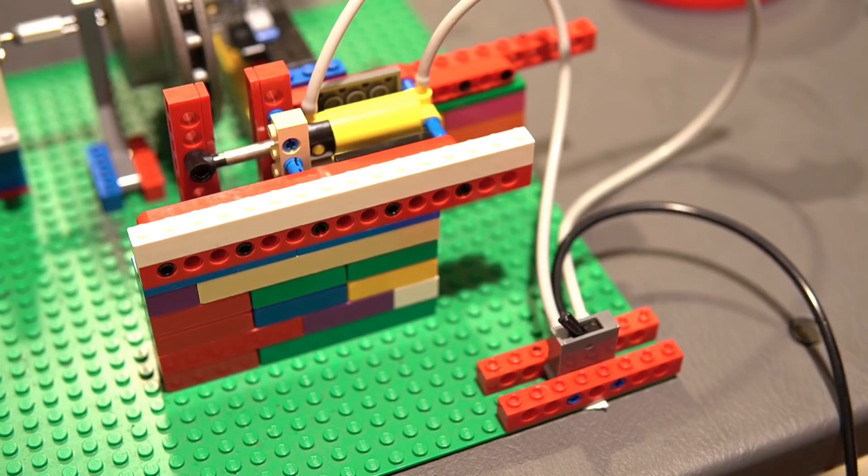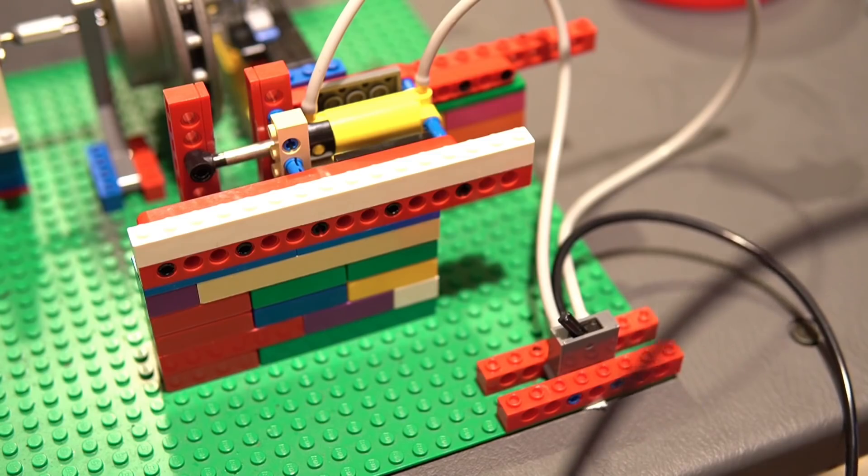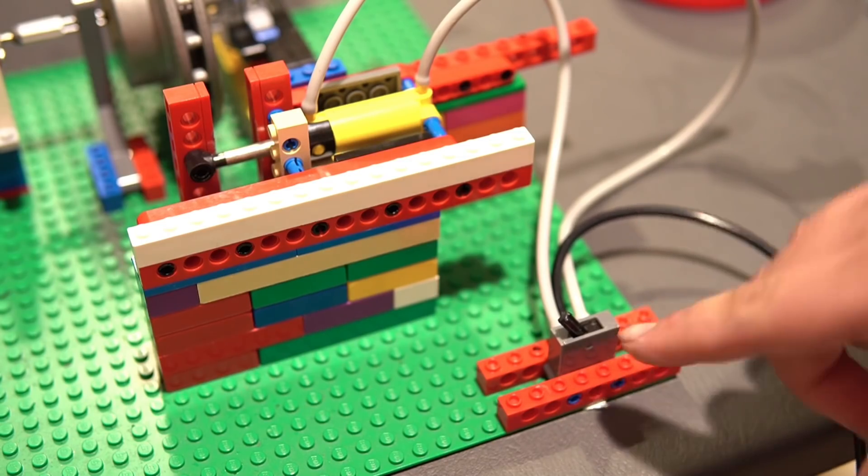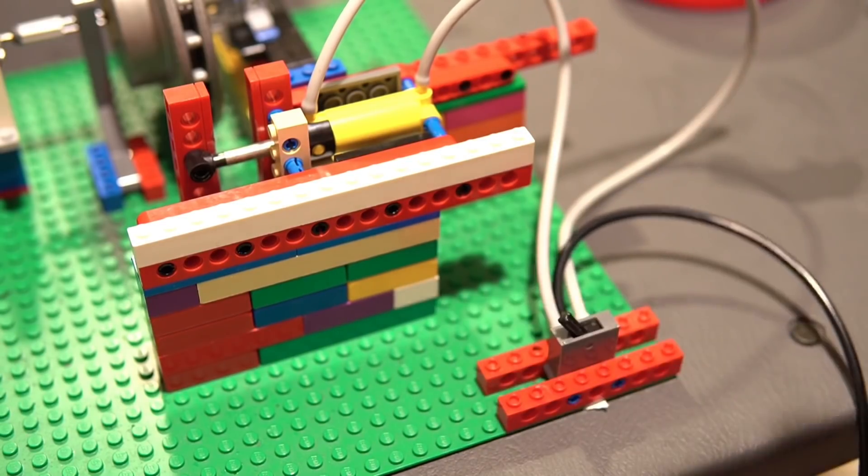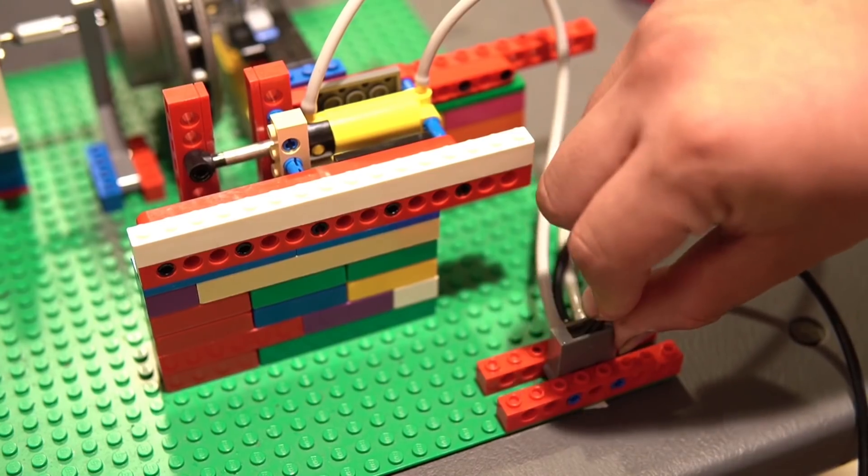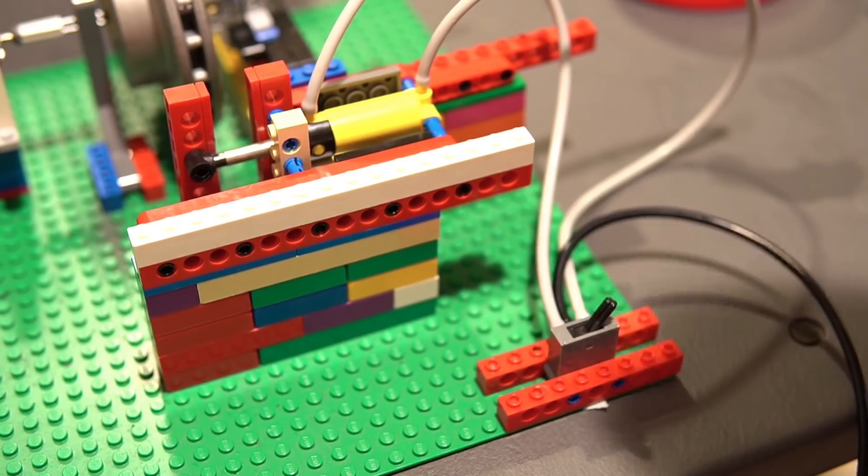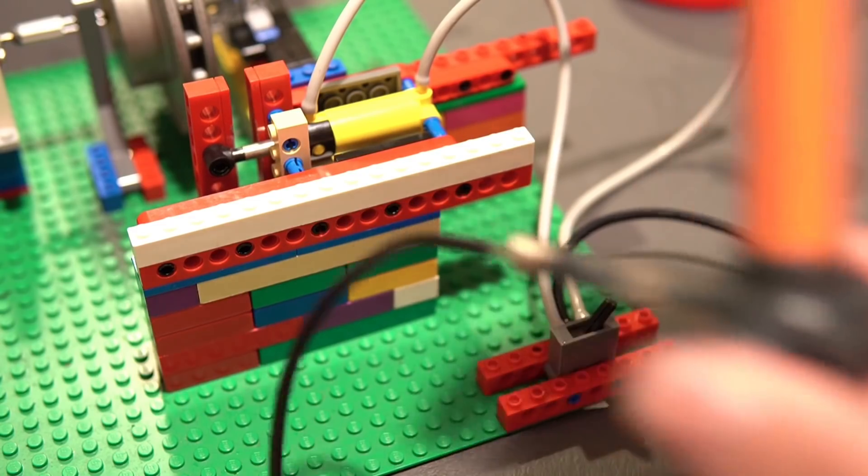LEGO pneumatics has been around, it's nothing new, and it's a very ingenious design LEGO implements into some of their creations. Very simple - you've got a selector lever, you've got a manual air pump, and by pumping the air you can actually control the piston on the other end. So you've got a master and you've got a slave.